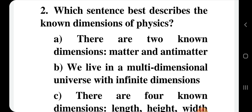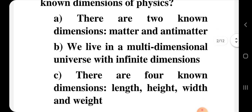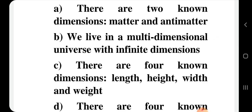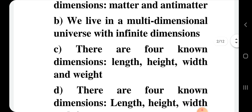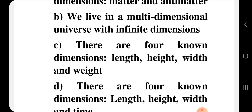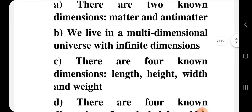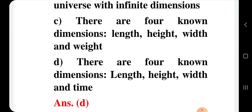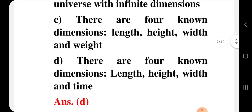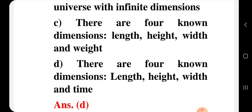Question number 2: Which sentence best describes the known dimensions of physics? Option A: there are two known dimensions, matter and anti-matter. Option B: we live in a multi-dimensional universe with infinite dimensions. Option C: there are four known dimensions — length, height, width and weight. Option D: there are four known dimensions — length, height, width and time. The correct option is D: four known dimensions are length, height, width and time, as position and time variables are x, y, z, and t.